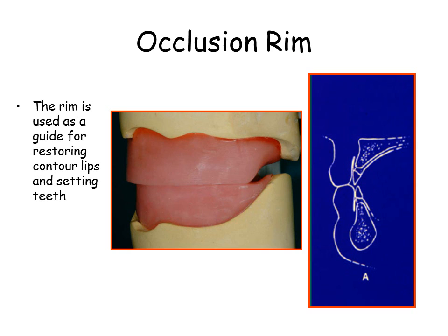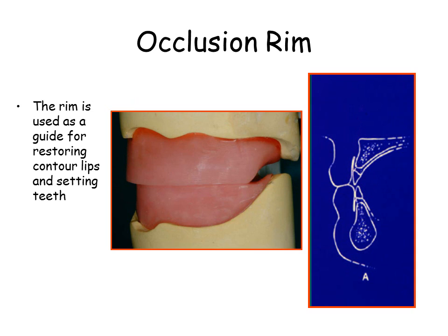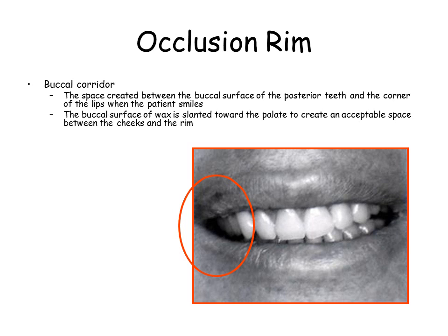The rim is used as a guide to setting teeth and restoring the lip contour. Note the incisor relationship of both areas. The rim is also used to evaluate and restore the contour of the cheeks. The buccal corridor is the space created between the buccal surface of the posterior teeth and the corner of the lips when the patient smiles. The buccal surface of wax is slanted toward the palate to create an acceptable space between the cheeks and the rim.